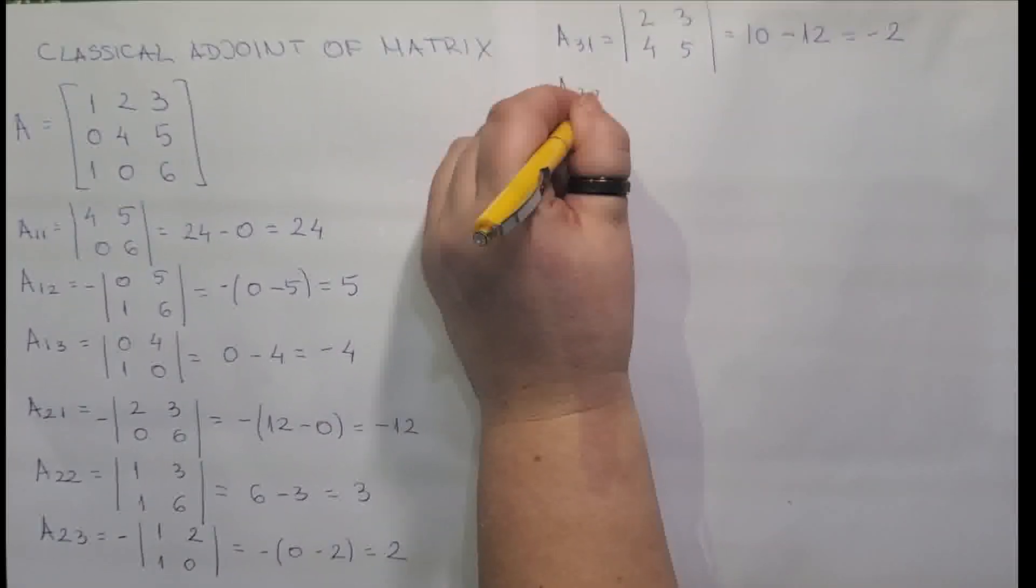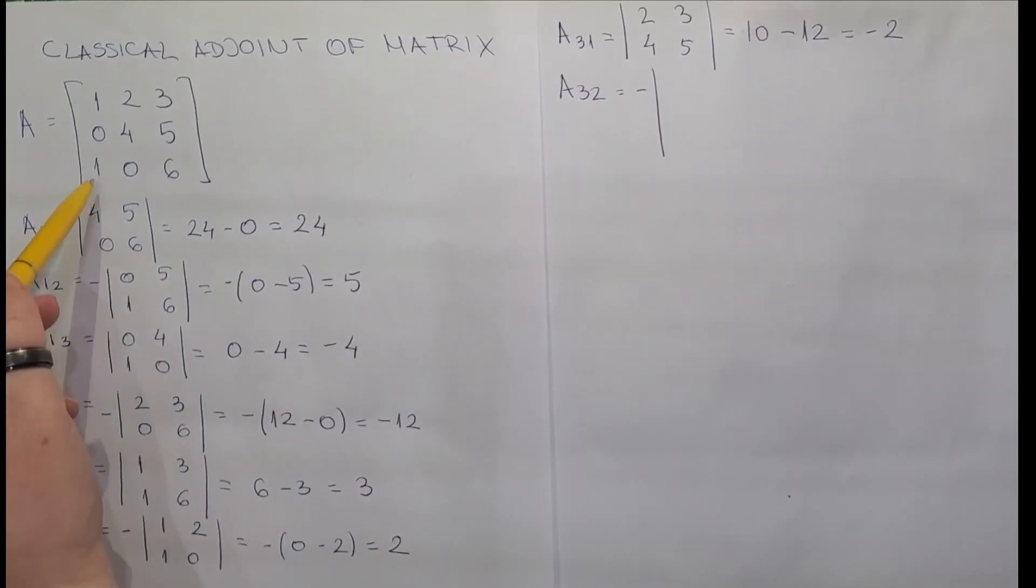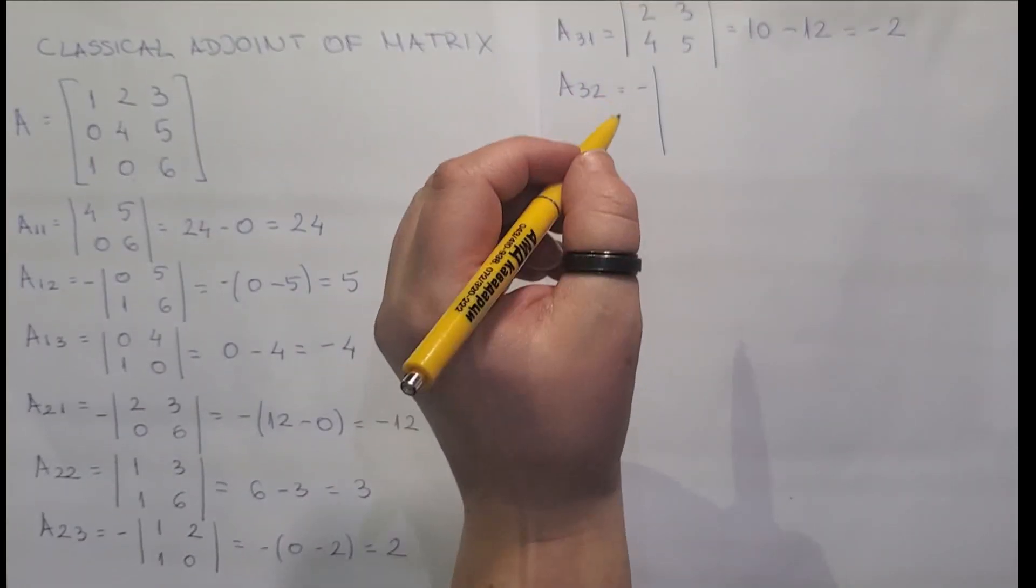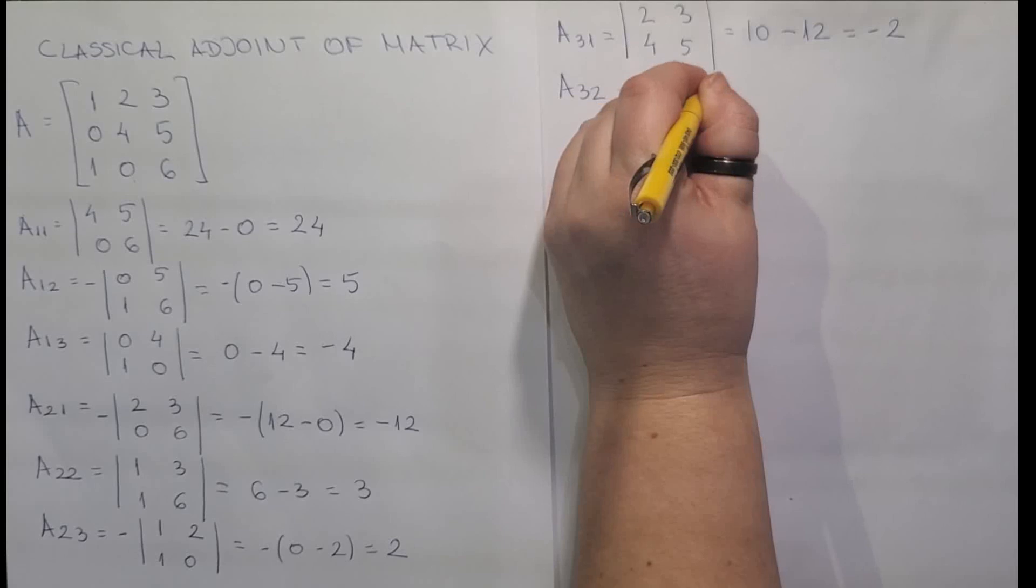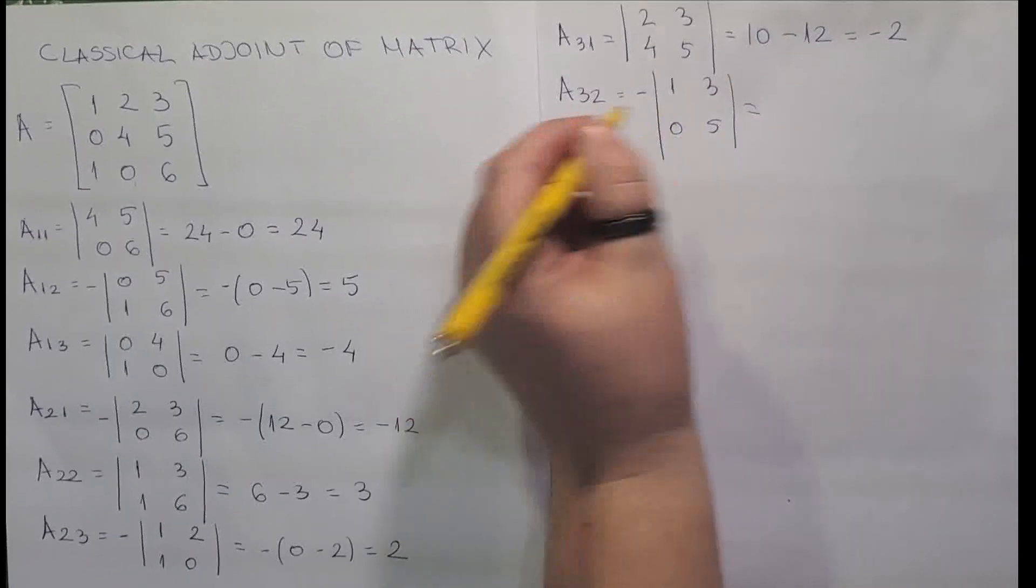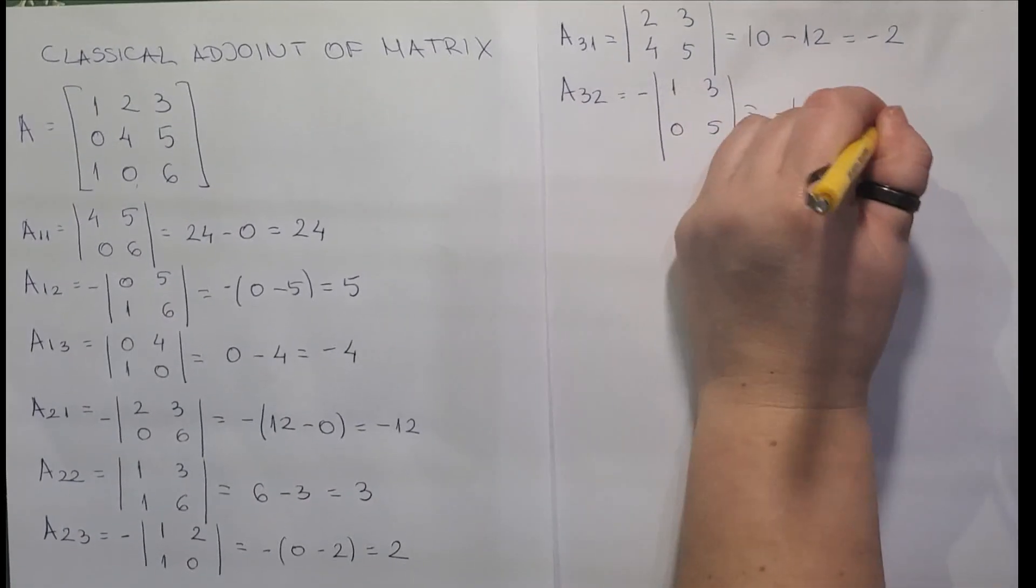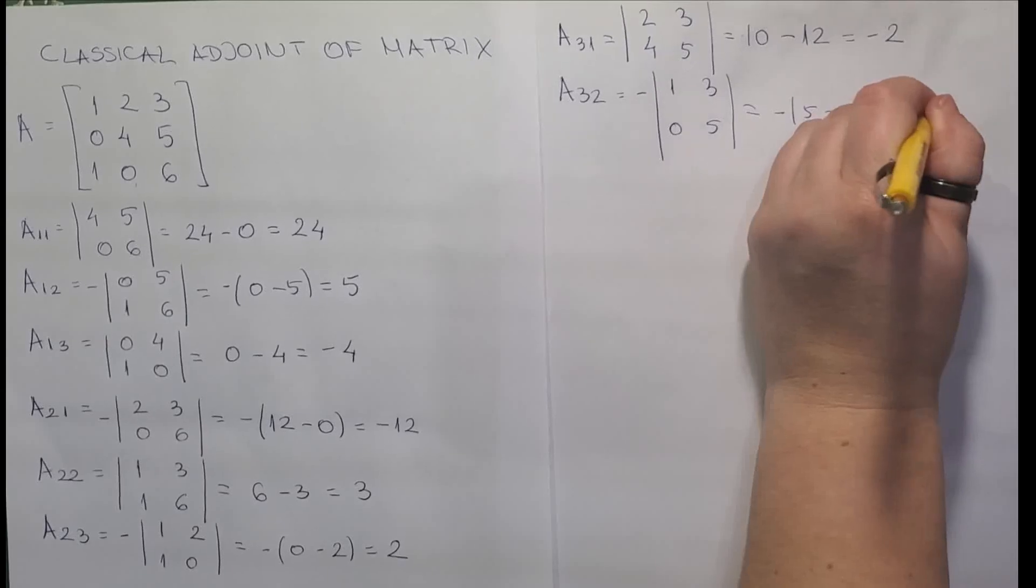a32 element starts with the minus sign and we are eliminating row number 3 and column number 2. So we have left with 1, 2, 0, 5. So we have minus 5 minus 0. This element is equal to minus 5.